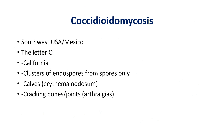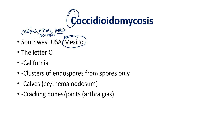Next: coccidioidomycosis. This is common in the southwest USA — think California, Arizona, New Mexico — because the primary origin is Mexico. States near Mexico are where it's most common. They may give you a patient who immigrated from Mexico presenting with symptoms of a suspected fungal pneumonia — really think coccidioidomycosis in that scenario.